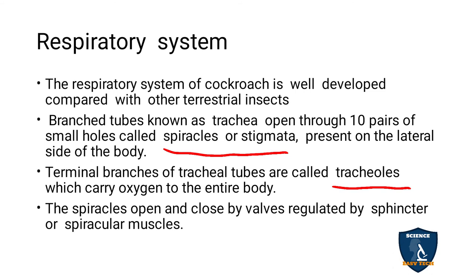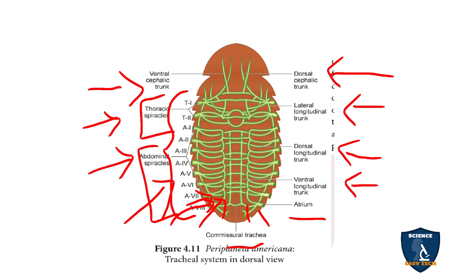You can see the tracheal tubes here. This respiratory system of cockroach is also known as the tracheal system of cockroach, because there are more tracheal branches — tracheoles and tracheids. The exchange of gases starts from the spiracle and forms a tube-like structure called trachea.